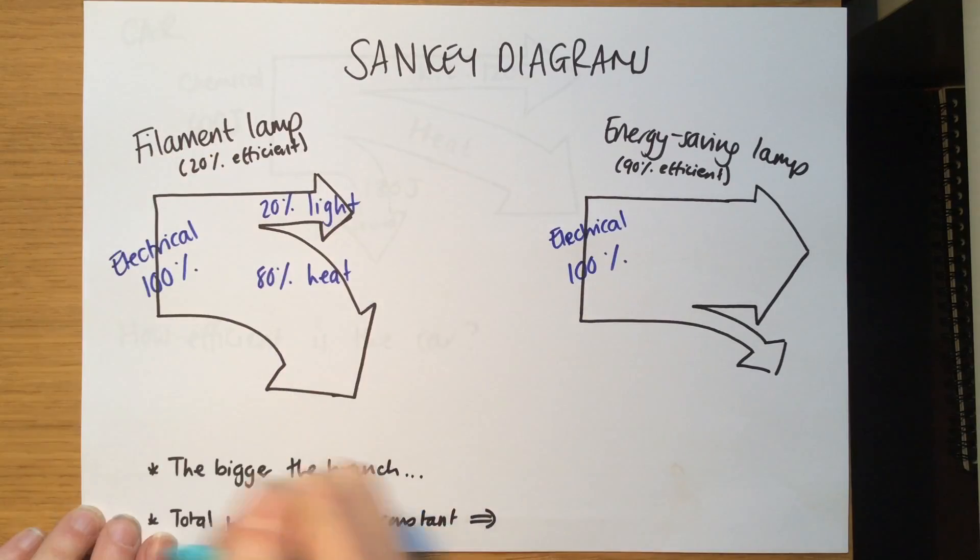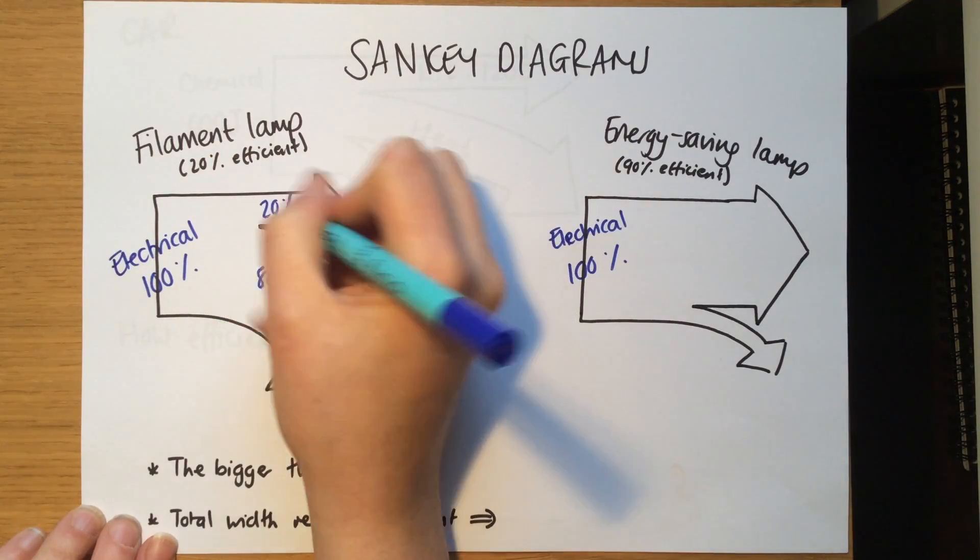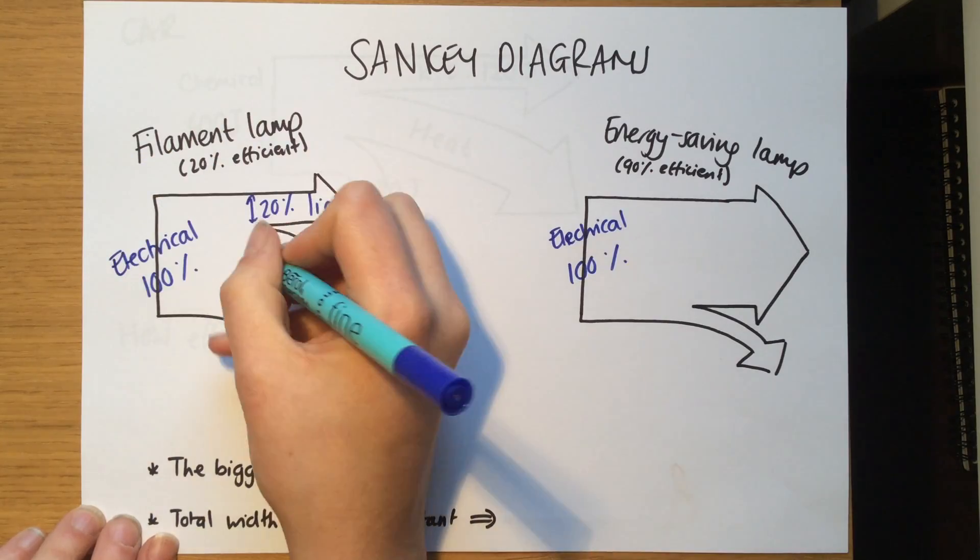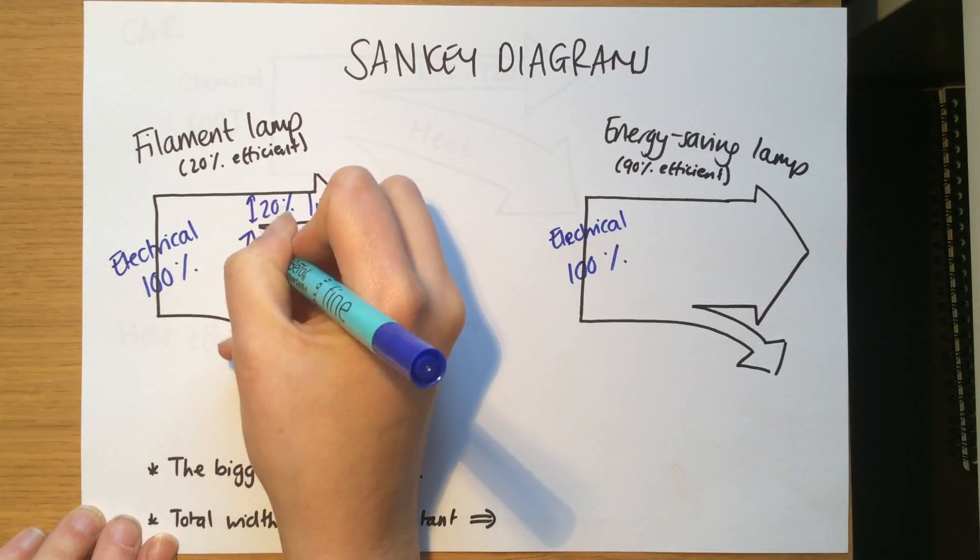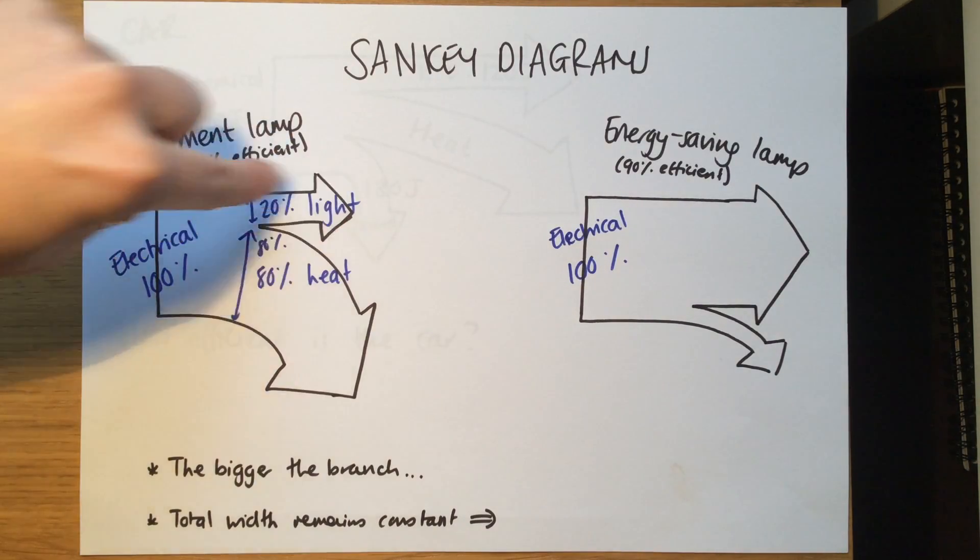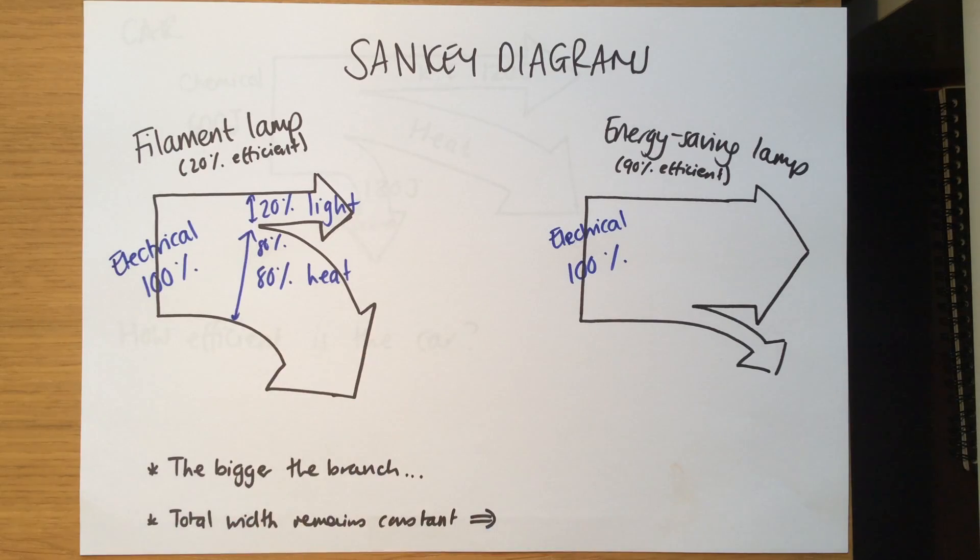This diagram shows that and you can see that this branch is about 20 percent if this is 100 percent, and this branch is about 80 percent here. Now it should be exactly, but I haven't used a ruler so it's not completely perfect.